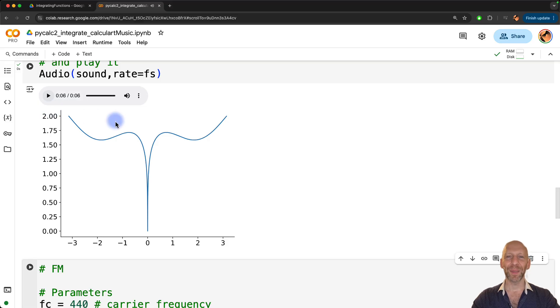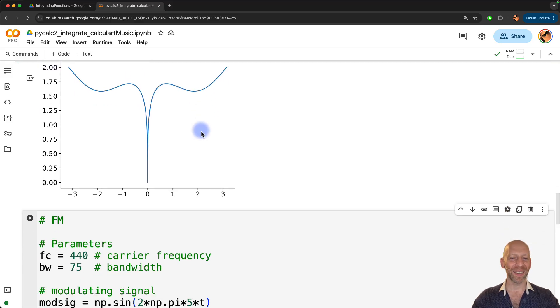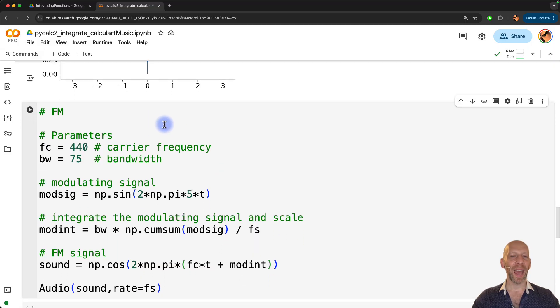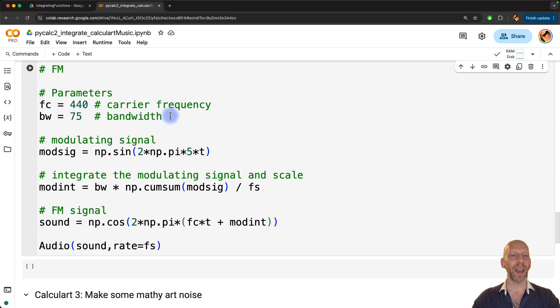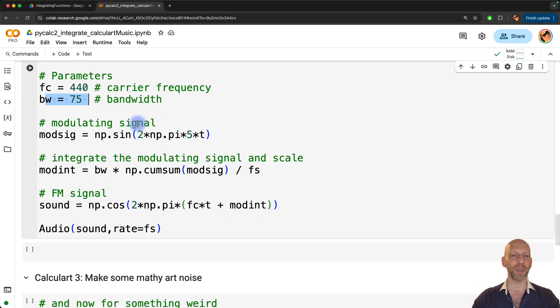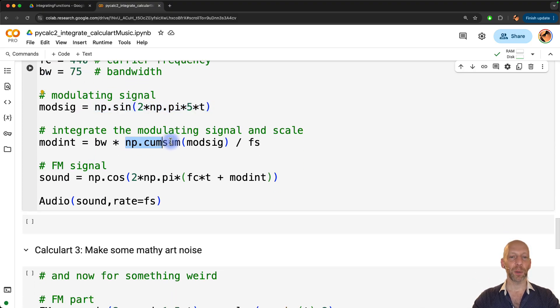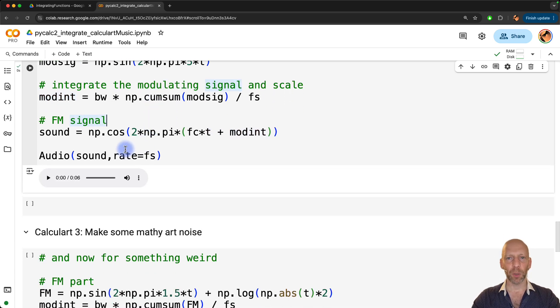Okay, so it's a bit subtle. I hope you were able to hear it. Here's the code for the FM modulation. I have the carrier frequency and the bandwidth parameter specified here, the modulating signal, and here, of course, we can use the cumulative sum function in NumPy to approximate the integral, which is used in here in the formula, and this is going to be a little bit more noticeable than the amplitude modulation.